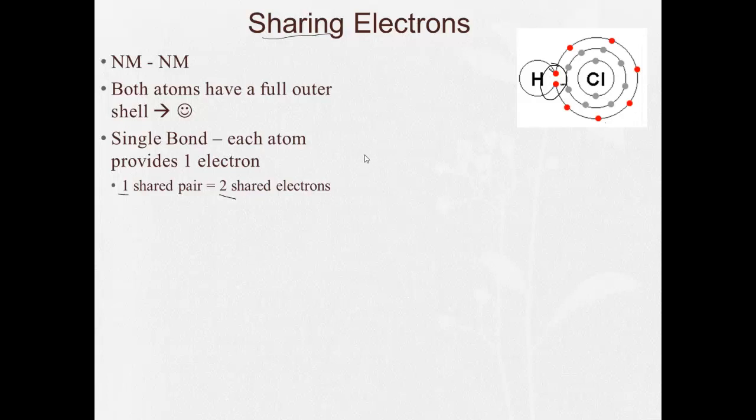If we're drawing a Lewis structure of this, you would draw like H, which is bringing one electron to the party. The chlorine is bringing seven electrons. Or it can be drawn like this: chlorine with seven electrons, and the hydrogen brings one, which the electron being drawn is an X. So it can be drawn either way.